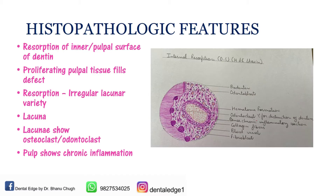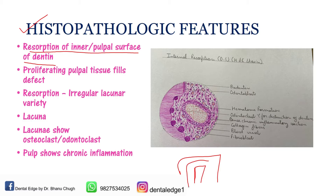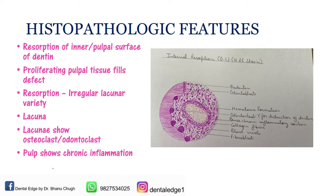Coming to the histopathologic features: if you know the basic features you will be able to remember the histopathology easily. There is resorption of the inner or pulpal surface of the dentine. On an H&E section of the tooth showing internal resorption, you can see the pulp and dentine with resorption occurring at the inner pulpal surface of dentine. The second point is that proliferating pulpal tissue fills the defect caused by the resorption.